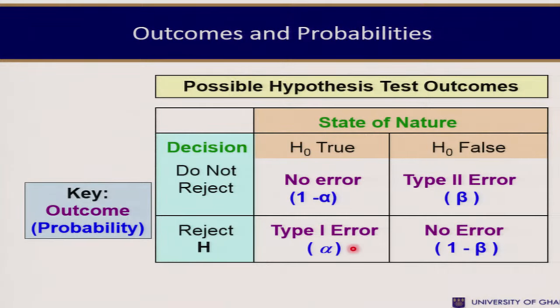So there are four outcomes in hypothesis testing: we can reject a null hypothesis that is actually true (type 1 error), fail to reject a null hypothesis that is false (type 2 error), correctly reject a false null hypothesis, or correctly fail to reject a true null hypothesis. Of these four outcomes, two represent correct decisions and the other two represent wrong decisions.